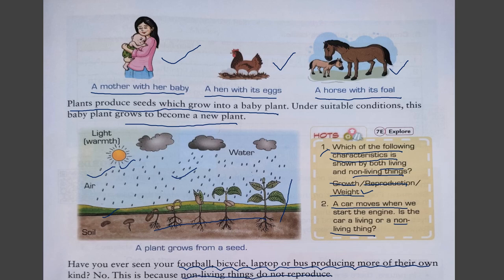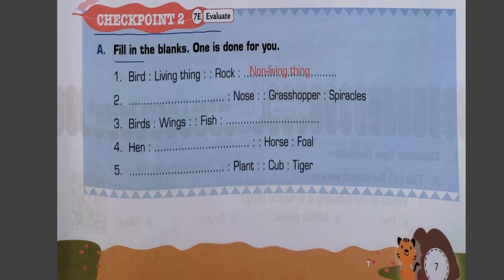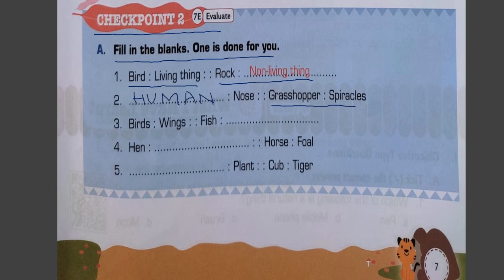We have Checkpoint 2: fill in the blanks. A bird is a living thing whereas a rock is a non-living thing. A grasshopper has spiracles for breathing, and humans breathe through their nose. Birds have wings to fly or move, whereas fish move by using their fins and tails.